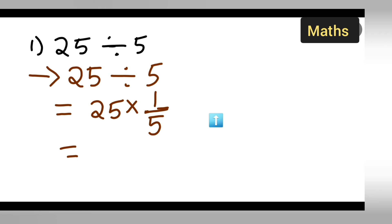So you're going to get 25 upon 5 which is equal to, you can cancel 5 ones are 5, 5 fives are 25. So basically your answer is nothing but 5 itself.